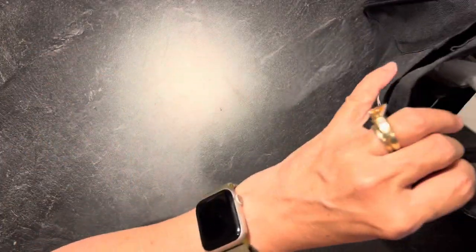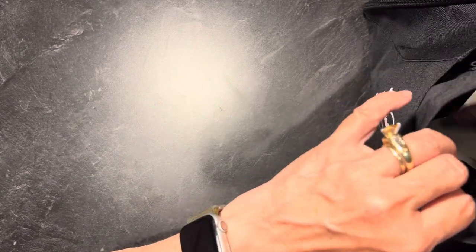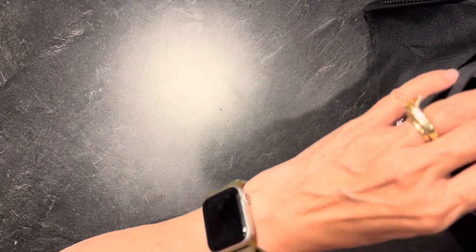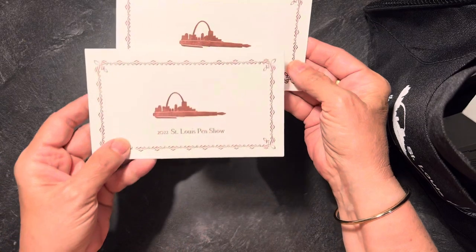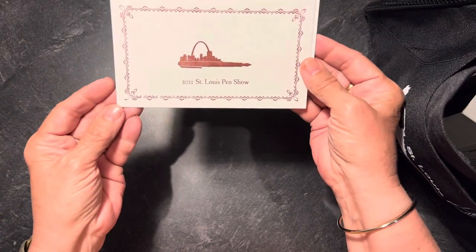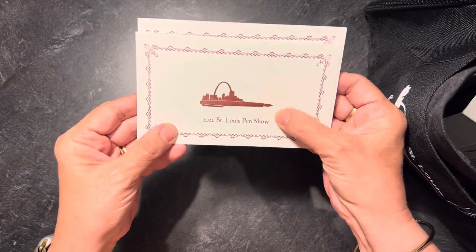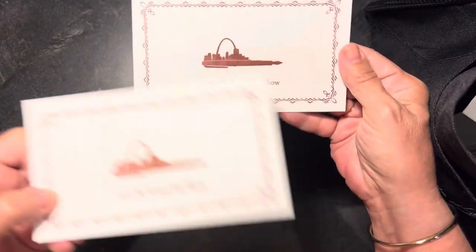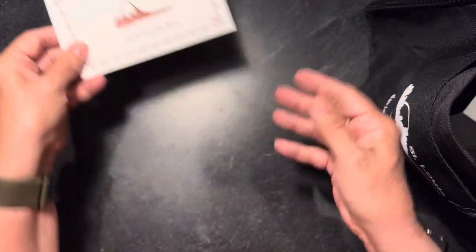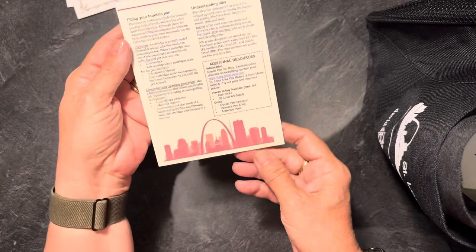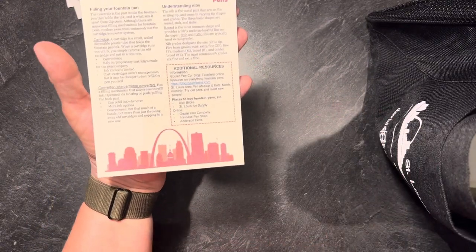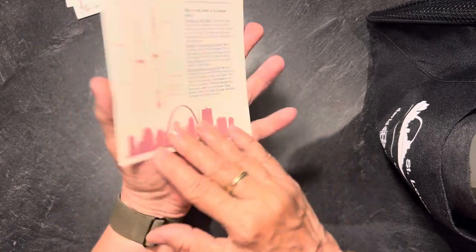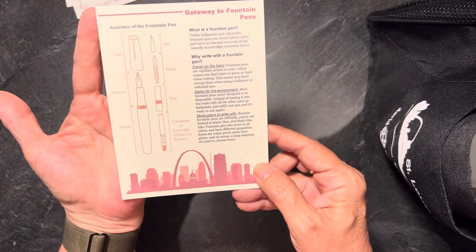So I think I'll just kind of grab stuff and show you as I come across it. So at the check-in or registration, they gave you these blotting paper things. St. Louis Skyline and pen. We just got a couple. We didn't each take one, and then they had this gateway to fountain pen. So St. Louis is the gateway to the West. So I'm guessing that's why they use that terminology. But I thought that was kind of cool.